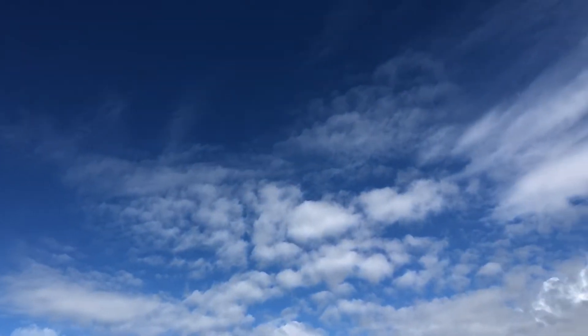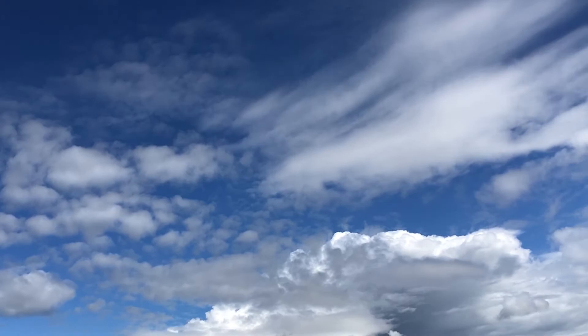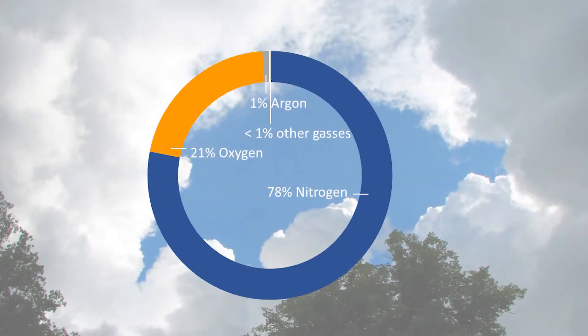We breathe about 12,000 liters of air each day — that's an amazing number! We are concerned about the quality of the food we eat and the water we drink, but how cautious are we actually about the quality of the air we breathe? Air consists of different gases and particles: about 78% nitrogen, 21% oxygen, about 1% argon, and less than 1% other gases.